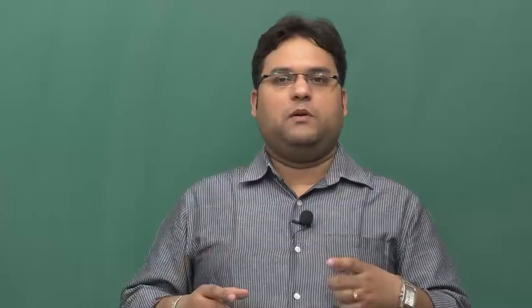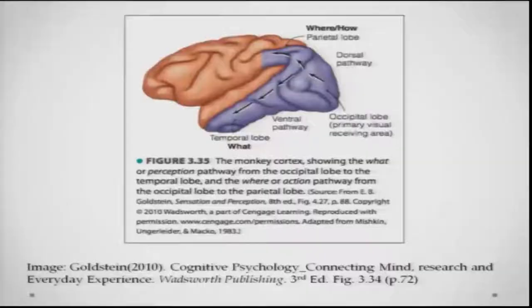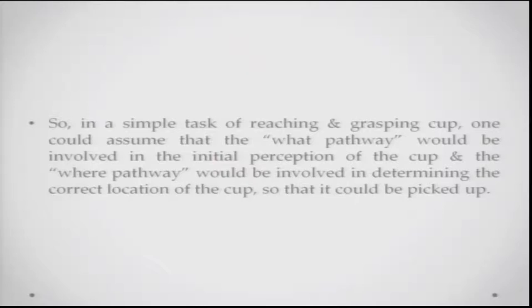You need both kinds of information to navigate successfully. The dorsal pathway is the where pathway and the ventral pathway is the what pathway. In a simple task like reaching and grasping a cup, the what pathway is involved in the initial perception of the cup, while the where pathway tells you where the cup is and how far your hand must move to grasp it. We use information from both pathways and integrate it to successfully interact with objects.